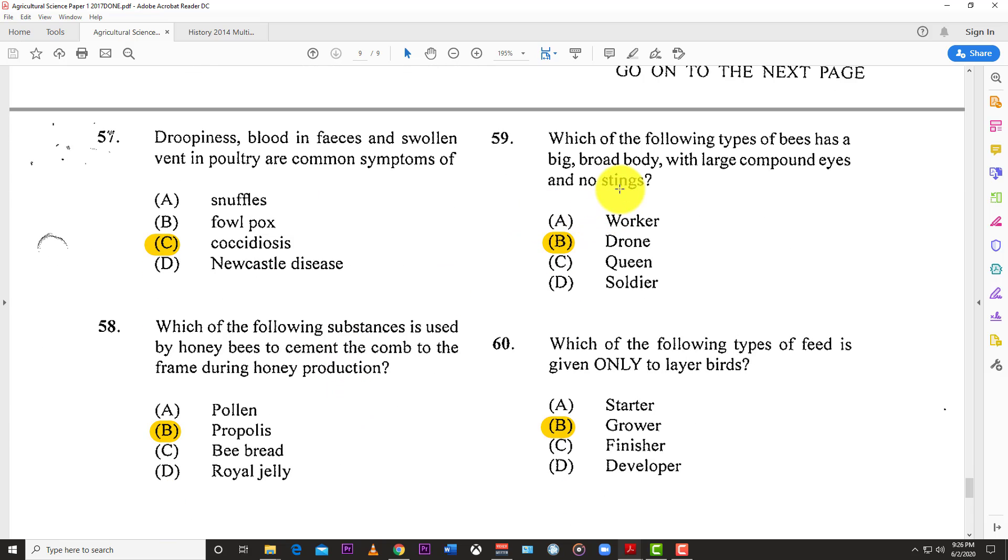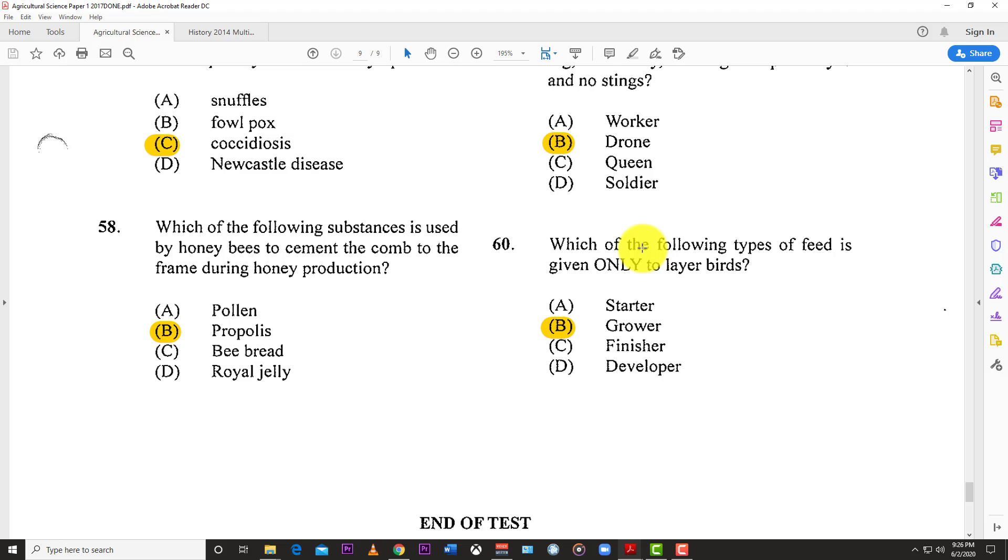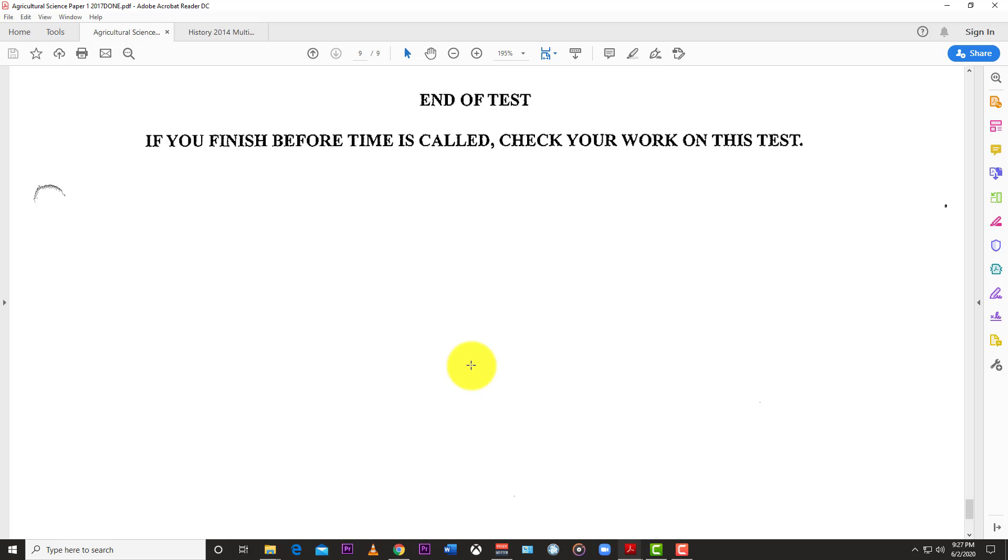Number fifty-eight: Which substance is used by honey bees to cement the combs to the frame during honey production? The answer is B, propolis. Number fifty-nine: Which type of bee has a big broad body with large compound eyes and no sting? The answer is B, drone. Number sixty: Which type of feed is given only to layer birds? The answer is the grower. The grower is given to layer birds until they finish their productive life cycle.